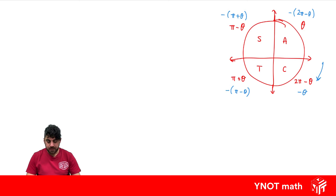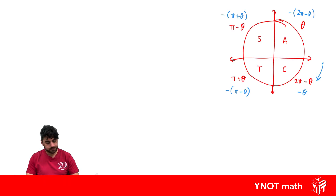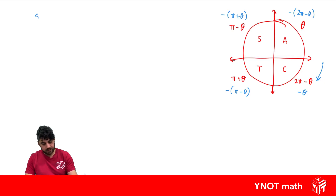Now we have everything we need in order to solve trigonometric equations using radians. Let's have a look at an example: sine x equals a half.